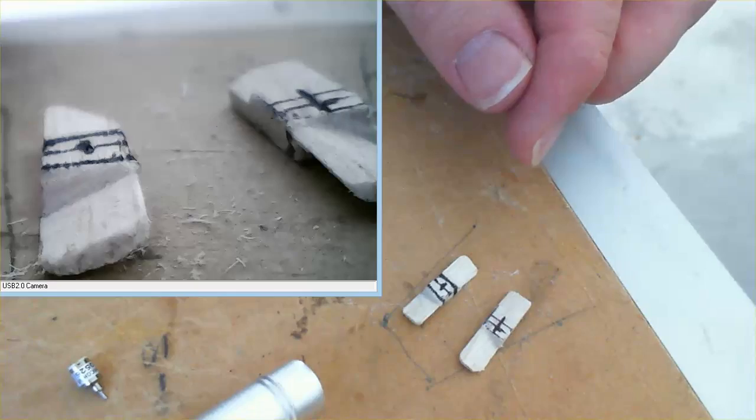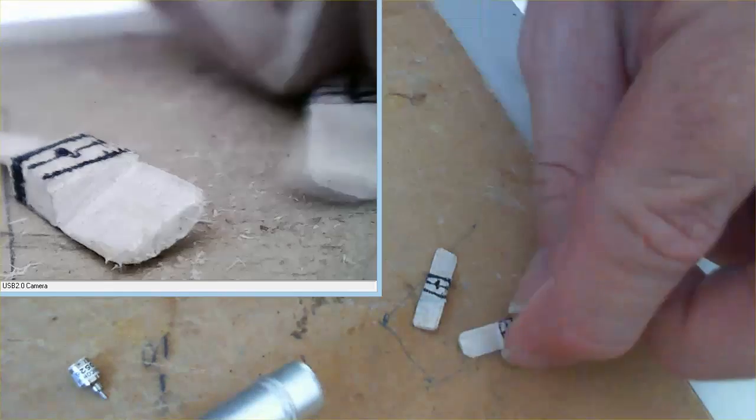So that's how we make a propeller out of balsa wood for a nano motor.